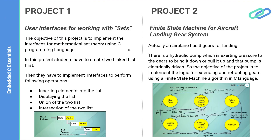In the Embedded C Essentials course, there are two highly interesting projects. In project one, you will be developing your own library and your own data type called a set, and you will be developing a set of APIs to access or apply operations on that data type called a set. This set is derived from mathematical set theory, and all operations such as union and intersection can be applied to a list of variables created with the sets. The prerequisite required for this project is that a student must first master linked list implementation.